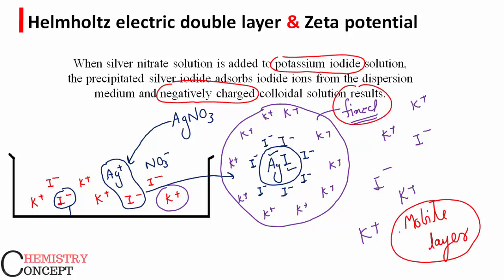So there is a fixed layer and there is a mobile layer, and the potential difference between this fixed layer and mobile layer is called zeta potential.